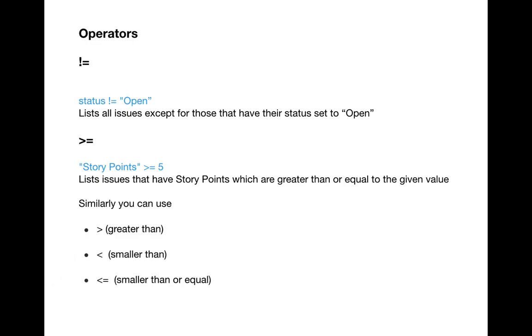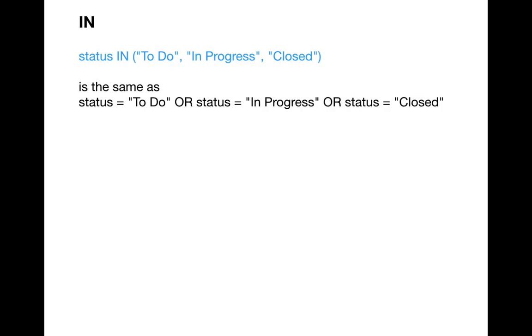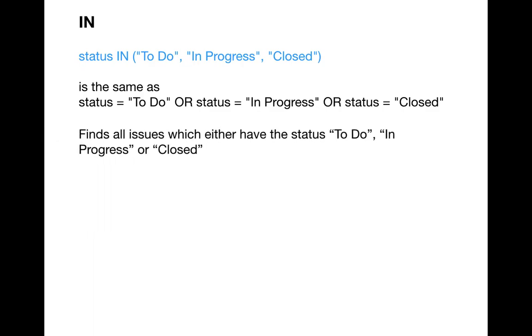The next keyword is IN. IN is used to find issues which have a particular status from a list. For example, if you're looking for issues in progress, closed, or open, rather than writing status = 'To Do' OR status = 'In Progress' OR status = 'Open', you can write: status IN (To Do, In Progress, Closed). It's a simpler form of writing the same thing that you'd otherwise write with multiple OR keywords.